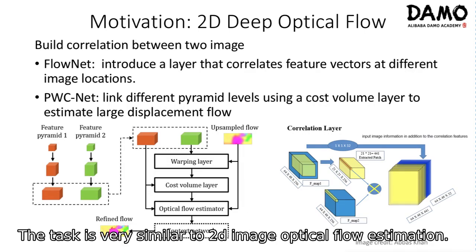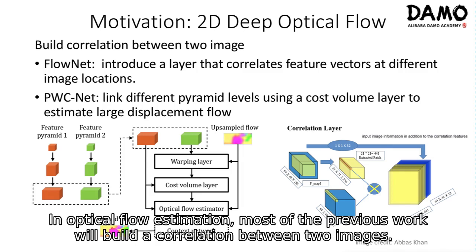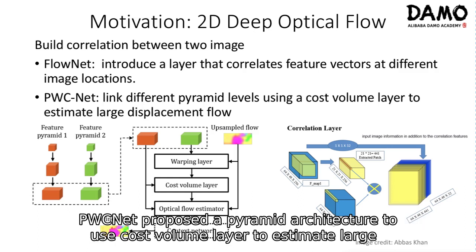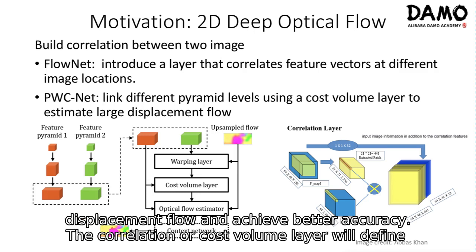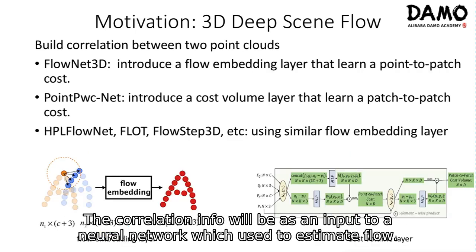The task is very similar to 2D image optical flow estimation. In optical flow estimation, most previous work builds a correlation between two images. Like FlowNet, which introduces a layer that correlates feature vectors at different image locations. PwCNet proposed a pyramid architecture using a cost volume layer to estimate large displacement flow and achieve better accuracy. The correlation or cost volume layer defines a regular search window to calculate correlation with each pixel in the window, and this correlation info is used as input to a neural network to estimate flow.